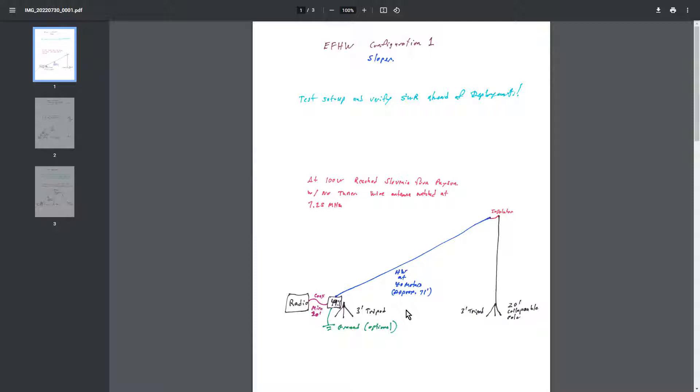So at field day the first year we're at 100 watts I was able to reach Slovenia from Payson. I had no tuner and the wire antenna was set basically it was matched at 7.25 megahertz. That was the sweet spot on 40 meters. And I was able to use 40, 20, 15, and 10. Not all of 10 obviously but part of 10 on this particular antenna.